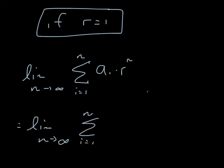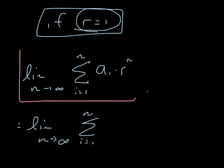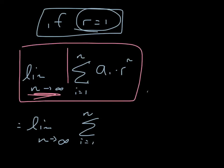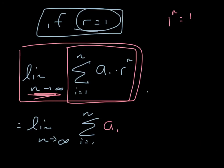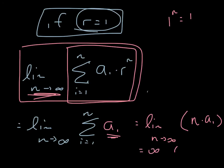The last case: what happens if r equals 1? If r equals 1, we can replace r with 1 in the geometric series formula, and 1^n just equals 1. So the statement becomes the sum of a_i — we're just adding the first term a1 over and over again, n times. This equals n times a1. And as n goes to infinity, this just equals infinity, or is undefined.